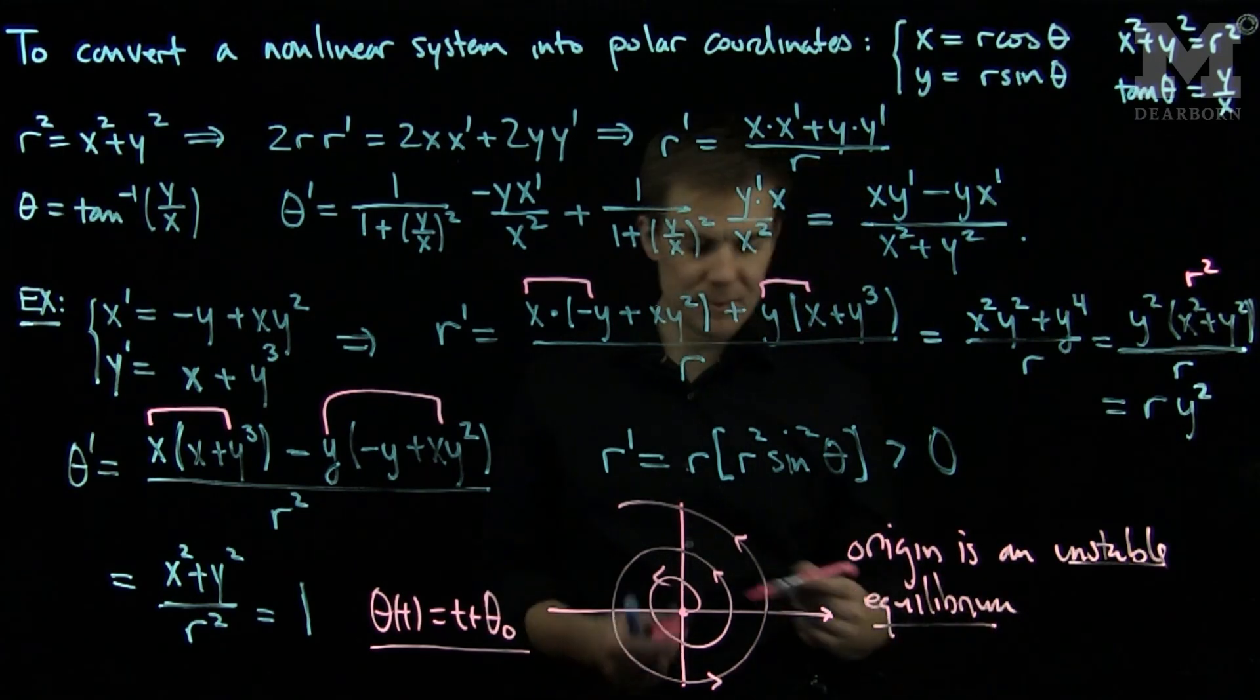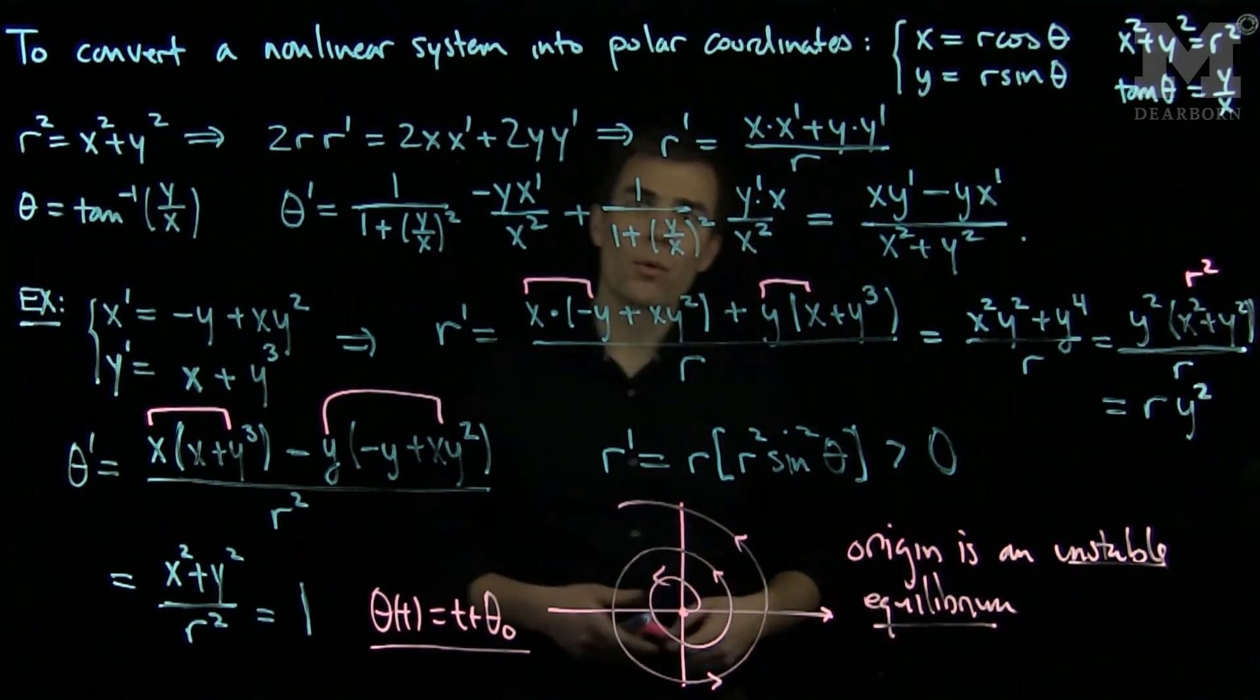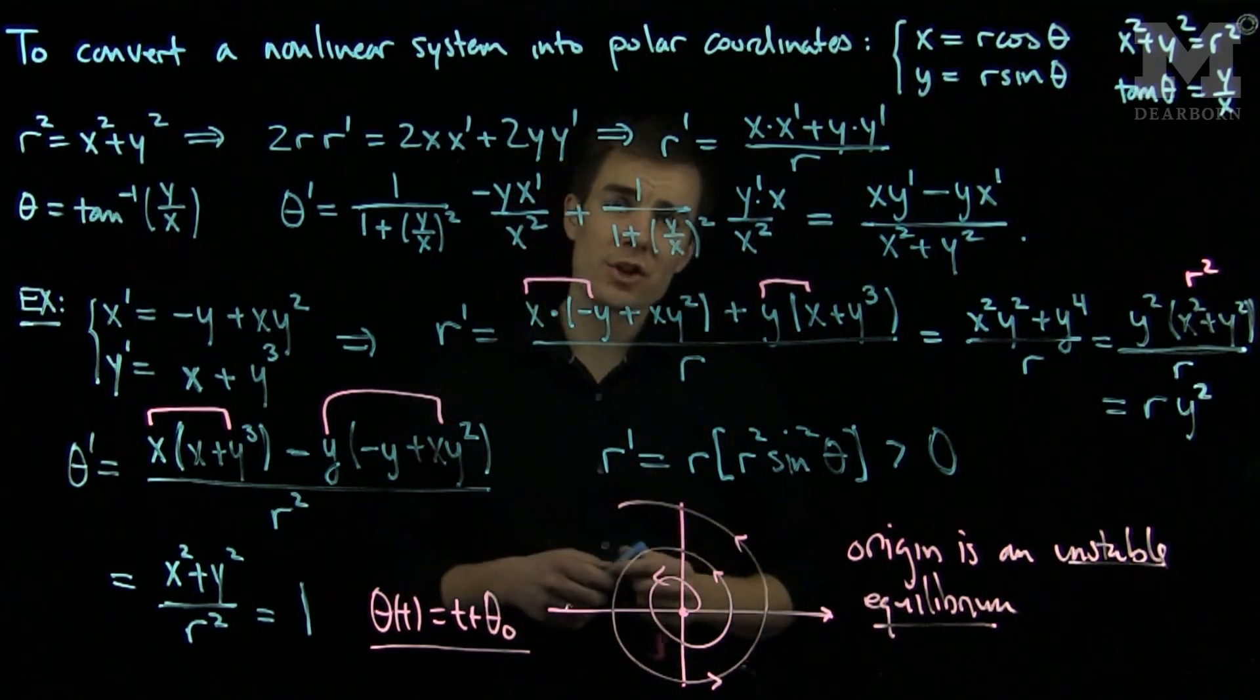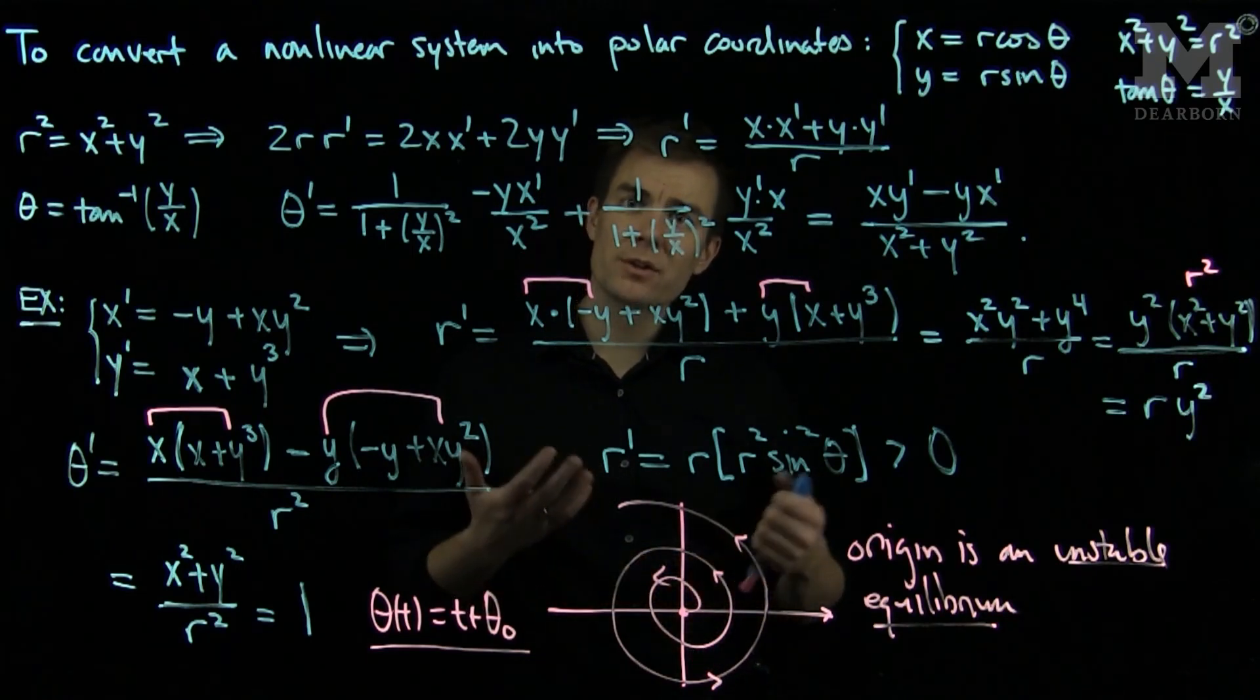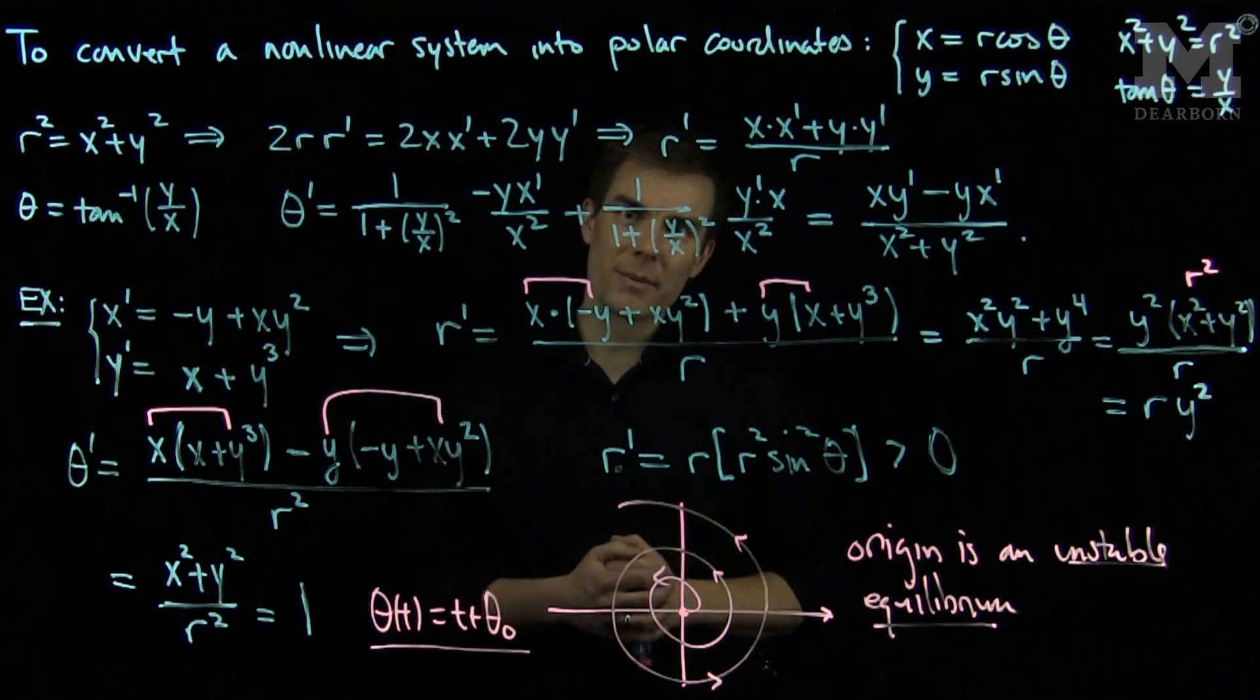Often times by converting to polar coordinates, we are able to get some qualitative information about the phase plane simply by determining the sign of r prime. Thank you very much.